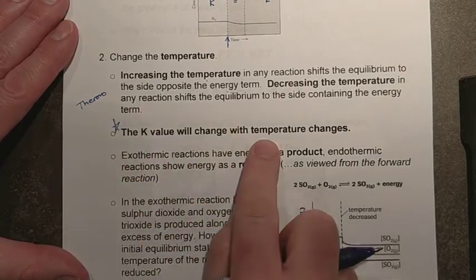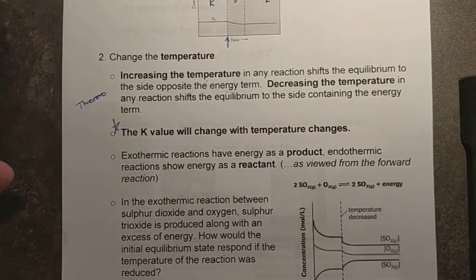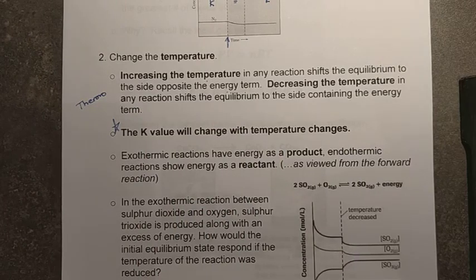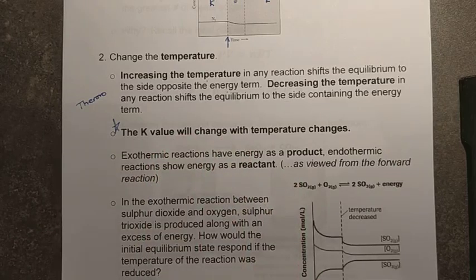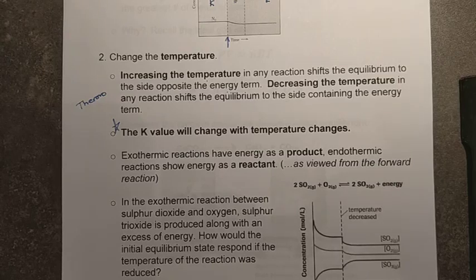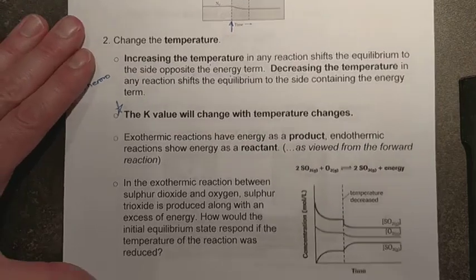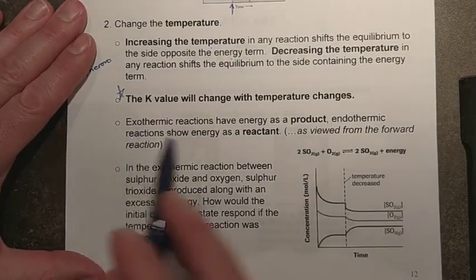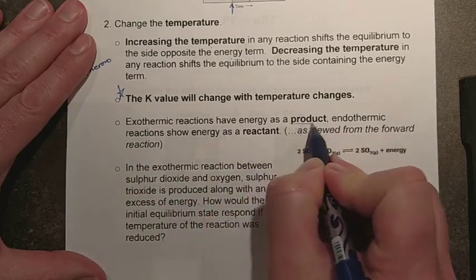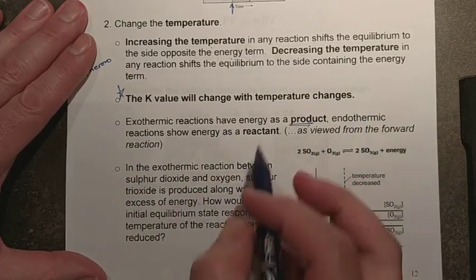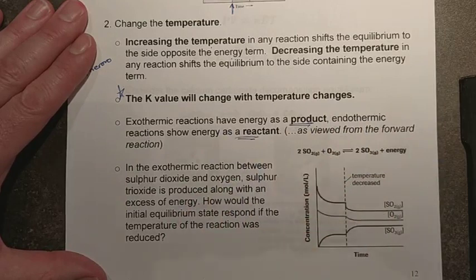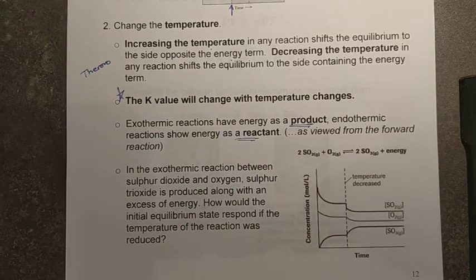What's important to realize is that K value will change with temperature — things will not work out like they did with concentration to give equal K values afterwards. This was a huge question that always came up theoretically on the diploma exam: which systems changed K, and which systems left K unaffected? Remember from thermochemistry, exothermic reactions treat energy as a product and endothermic reactions treat it as a reactant.